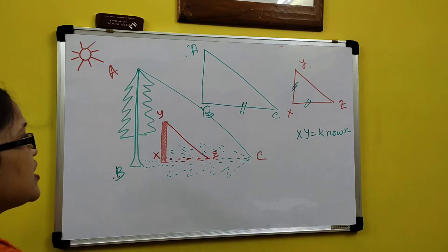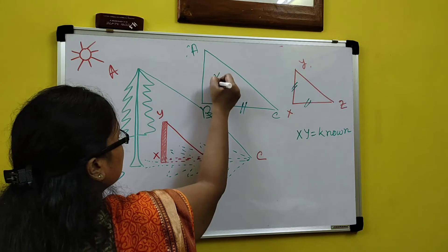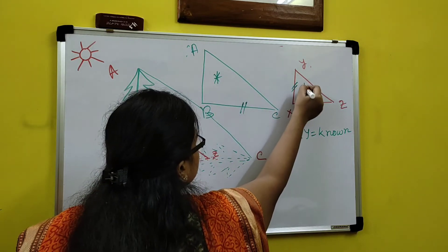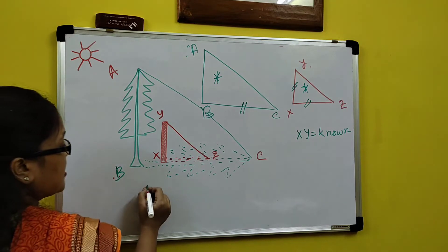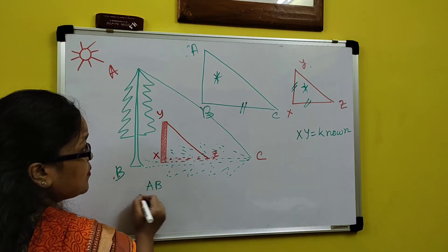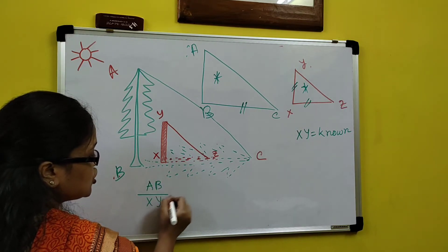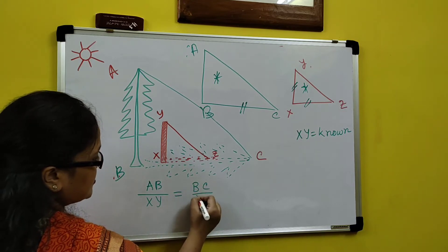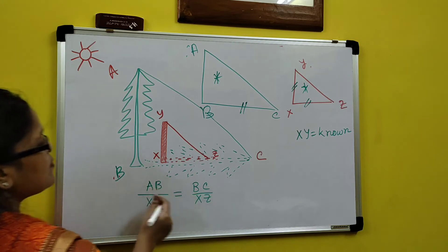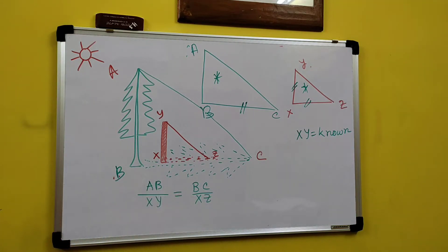Means what? If this triangle and these triangles are similar, then obviously the ratio of the sides means AB by XY should be equal to BC by XJ. Clear?